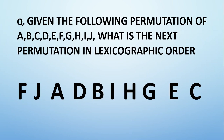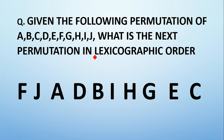Hello and welcome to my YouTube channel, Witty Scholars. Today, I will be explaining a step-by-step solution for finding the next permutation in lexicographic order when a particular permutation pattern is given. Given the following permutation of letters A to J, what is the next permutation in lexicographic order? We have to find out what would be the next permutation pattern if we consider the lexicographic order, which is nothing but the dictionary order.